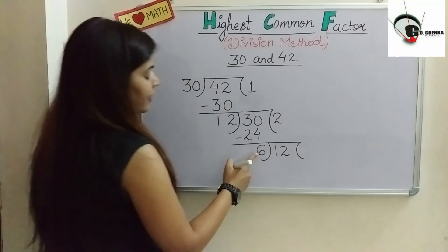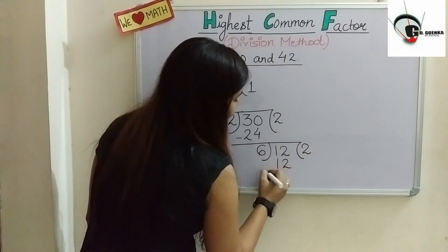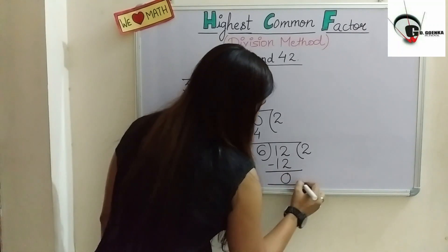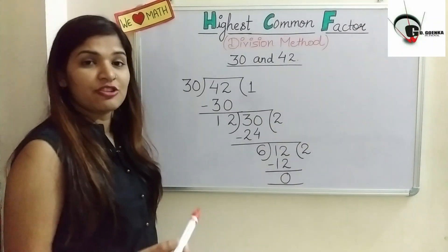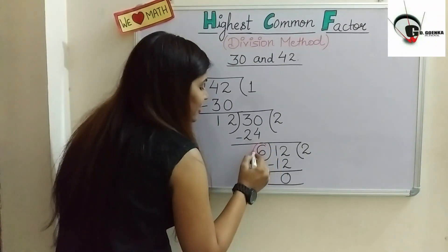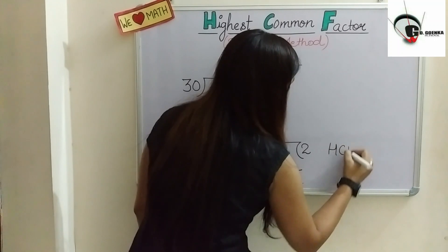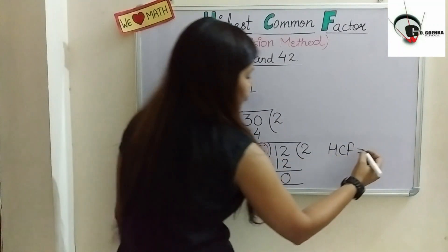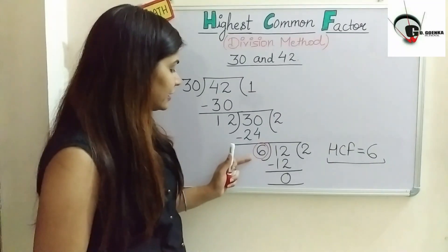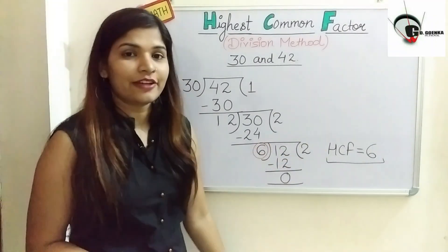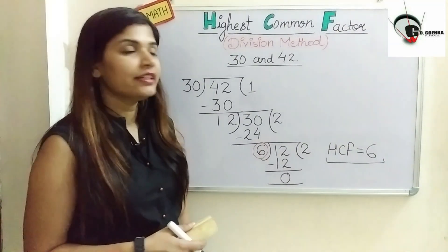6 is the remainder, so 6 becomes the new divisor and 12 becomes the new dividend. We check 6 with 12: 6 twos are 12, and we get a remainder of 0. Since we got 0, we stop here. The last divisor is our HCF. So the HCF of 30 and 42 is 6. Isn't it interesting that the last divisor gives us the HCF?